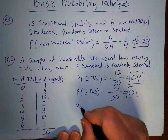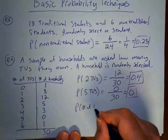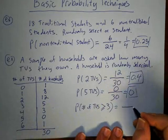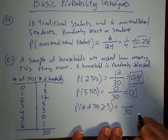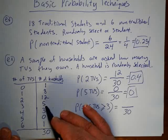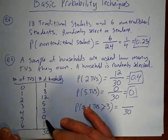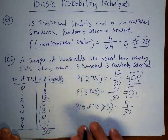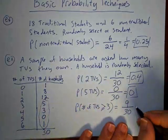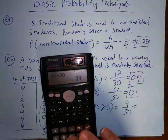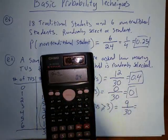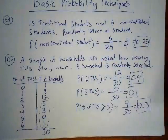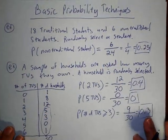Another type of question: what's the probability that the number of TVs is greater than or equal to 3? Out of 30 households, I add those with 3, 4, 5, or 6 TVs: 5+3+0+1 = 9 households had 3 or more TVs. So the probability is 9 out of 30, which equals 0.3.